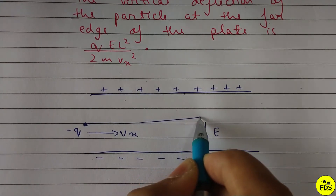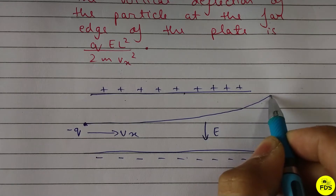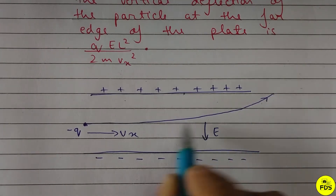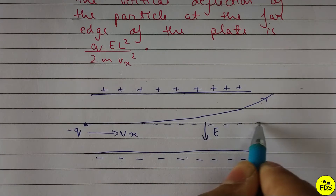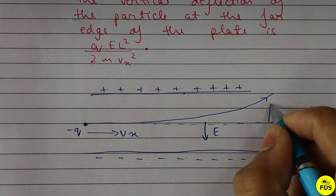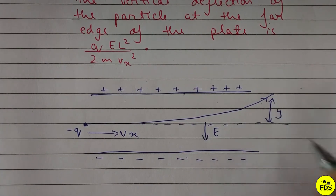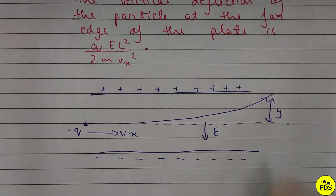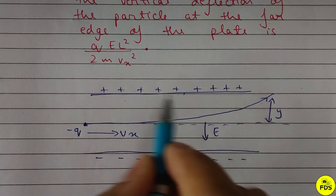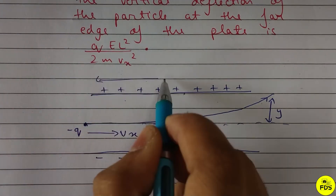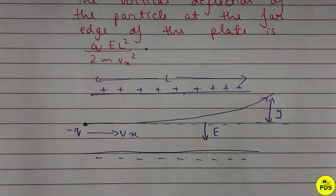The minus q charge will be deflected toward the positive plate. The deflection is toward the positive plate. The length of the plate is L.